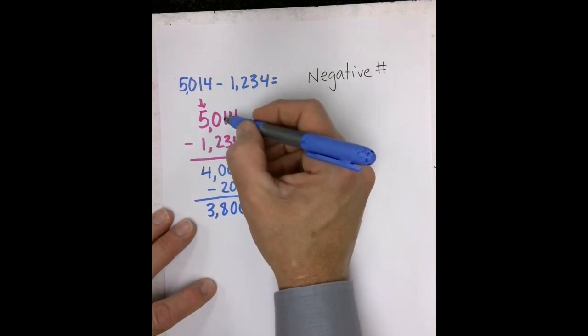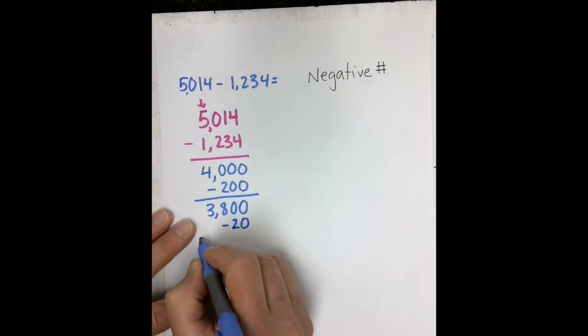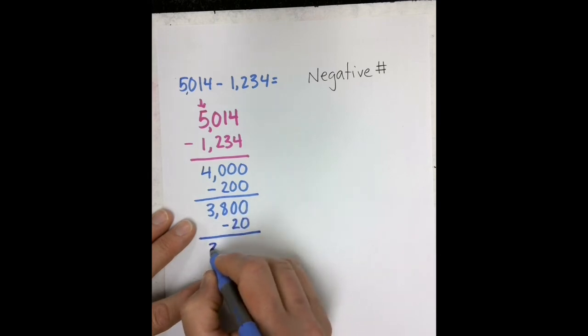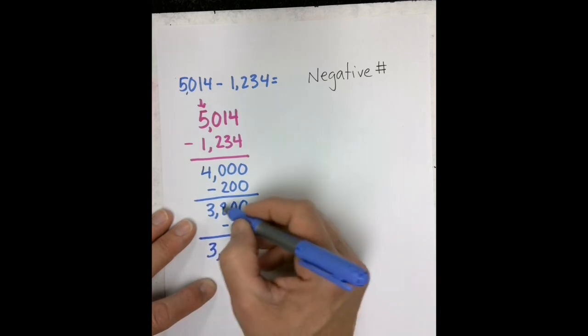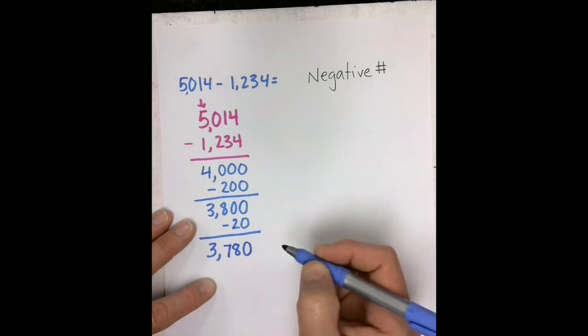To our next number, we get in our tens, 1 tens minus 3 tens would be a negative 2 tens. When I combine, my thousands are going to stay the same, and then I have 80 minus 20. 80 tens minus 2 tens would be 78 tens, or 780.